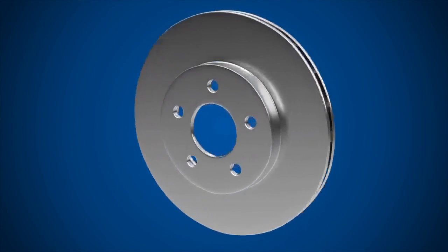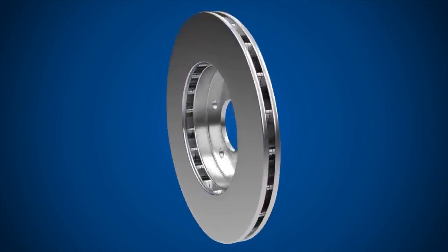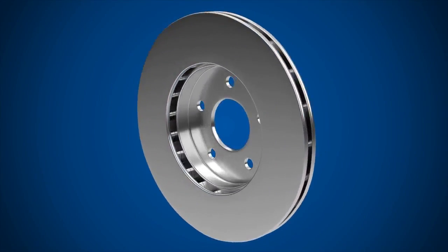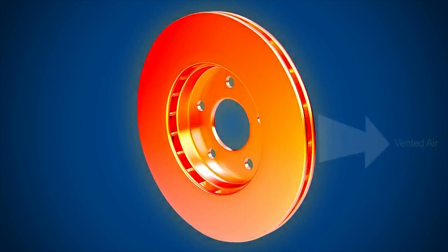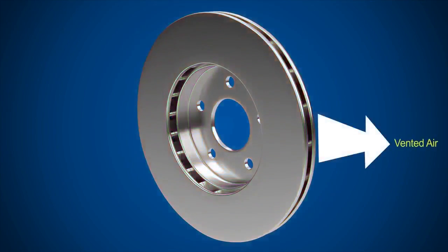This vented brake disc consists of two round metal plates, inside which there is a metal venting system. Brake pads squeeze against the disc to create friction, slowing the wheel. Friction creates high levels of heat, but the venting system reduces this heat by helping to circulate air, cooling the disc.